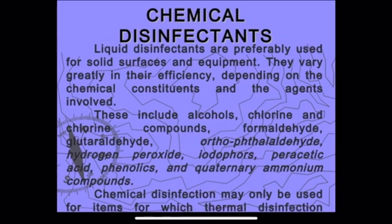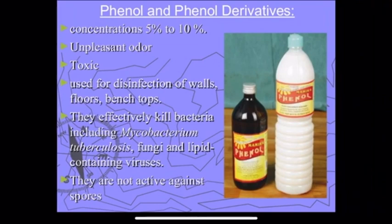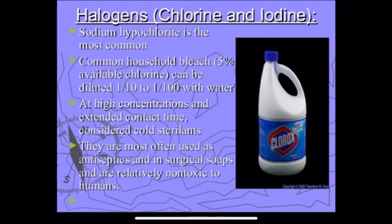Chemical disinfectants include formaldehyde, glutaraldehyde, and CIDEX solution — used to disinfect forceps. Hydrogen peroxide is also a chemical disinfectant. Phenol and phenol derivatives are examples of chemical disinfectant solutions. Halogens such as chlorine or iodine — including sodium hypochlorite — are also chemical disinfectants.